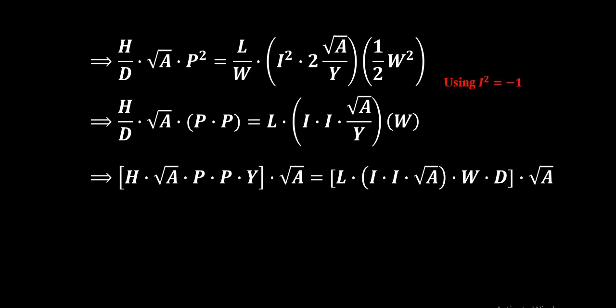Then next line, if we transpose D to the right side and Y to the left side, we get H into root A into P into P into Y, and to the right side L into I into I into root A into W into D. Now we can see the presence of root A in the left hand side as well as in the right hand side. So there are two options for us.